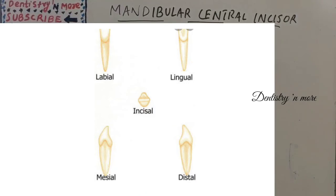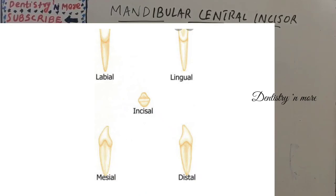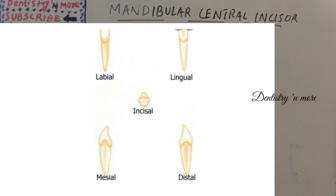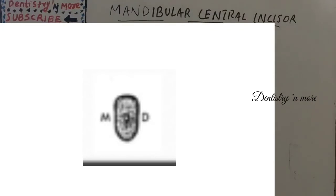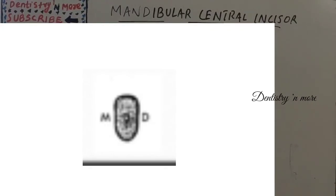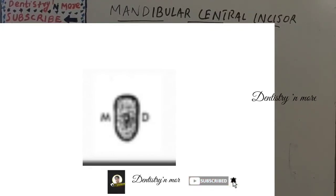The central portion of the mesial and distal surface is usually flattened or concave. The cross section at the neck is roughly a rectangle with rounded corners, slightly wider at labial than lingual. Where root concavities are present, they are reflected as concavities in the mesial and distal outlines. The mid-root cross section is similar to the cervical section but more ovoid in shape.